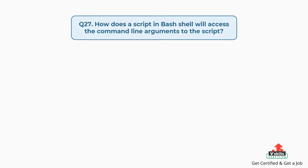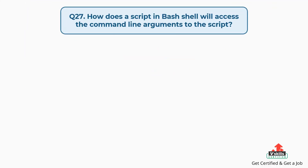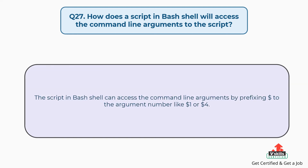Question number twenty-seven: how does a script in bash shell access the command line arguments? The script in bash shell can access the command line arguments by prefixing dollar to the argument number, like $1 or $4.